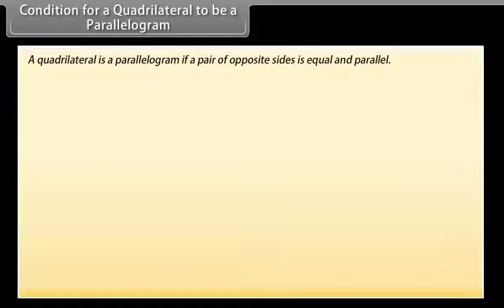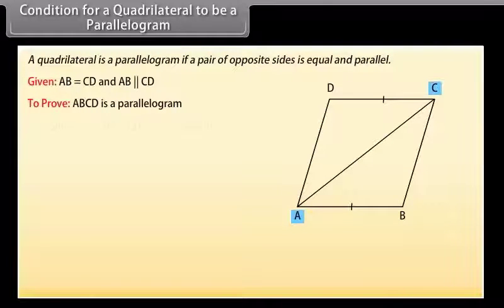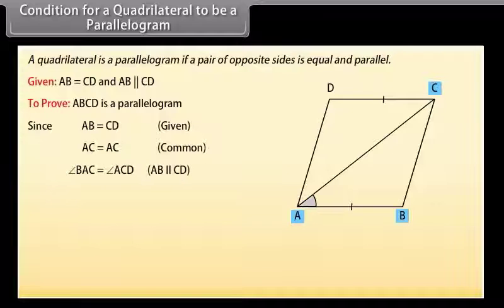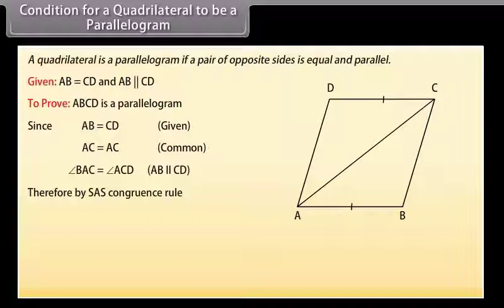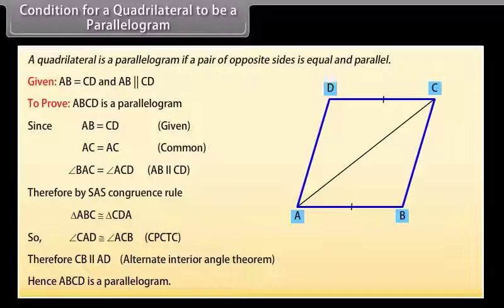Condition for a quadrilateral to be a parallelogram: A quadrilateral is a parallelogram if a pair of opposite sides is equal and parallel. Given AB = CD and AB is parallel to CD, we have to prove ABCD is a parallelogram. Draw diagonal AC. Since AB = CD (given), AC = AC (common), and angle BAC = angle ACD (AB parallel to CD), by SAS congruence rule triangle ABC is congruent to triangle CDA. So angle CAD = angle ACB, therefore CB is parallel to AD, hence ABCD is a parallelogram.